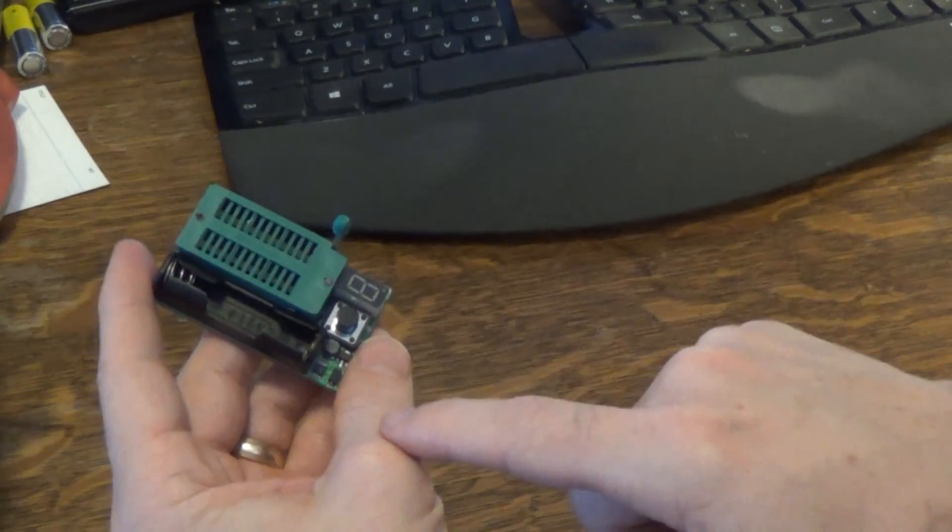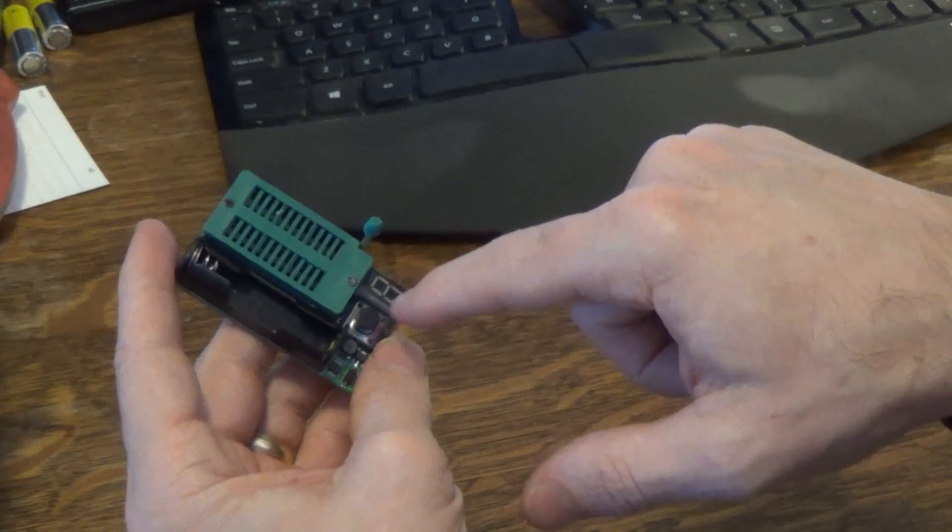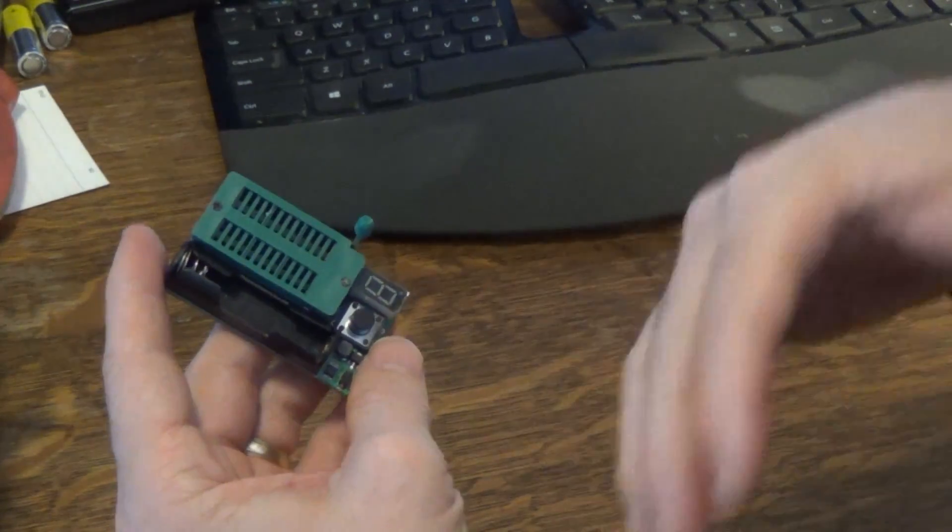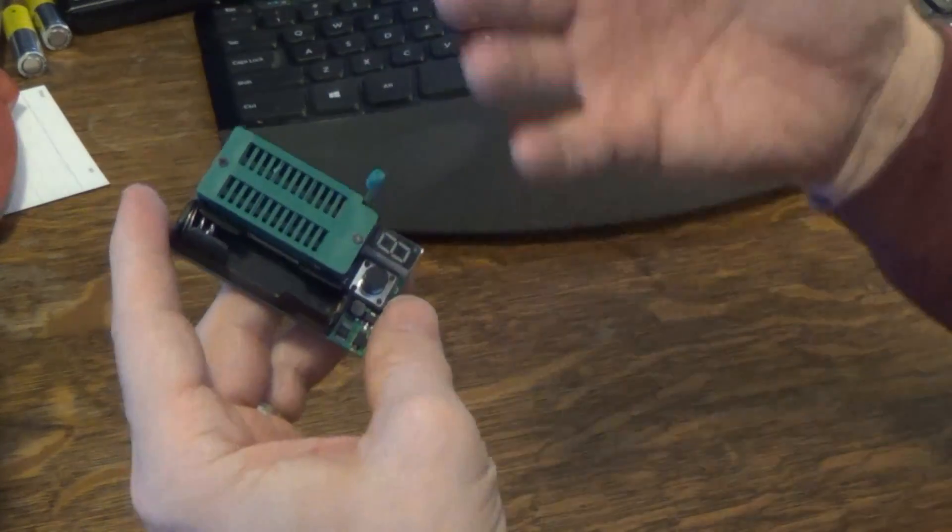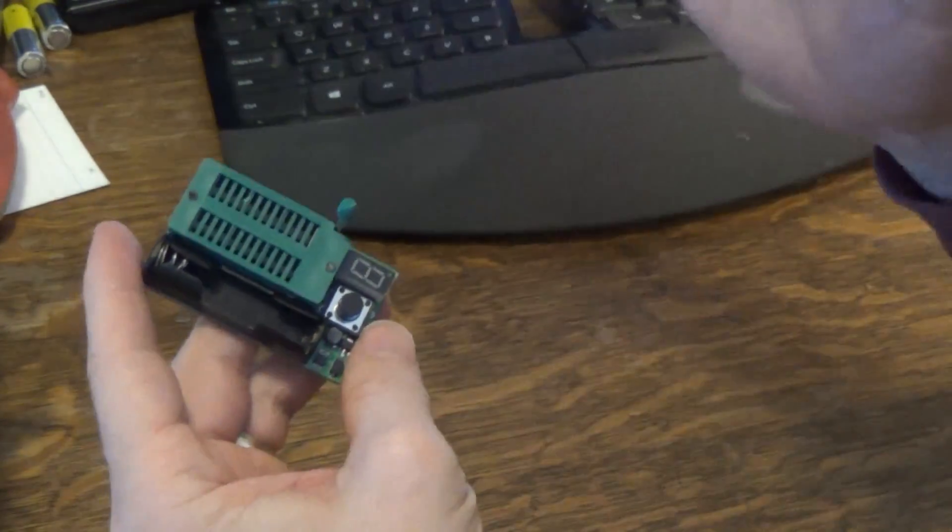And then supposedly you just push down the button. It records on some digital displays here. It will flash the number of the chip. So let's say it's a 7402. It'll say 7402. Something like that.